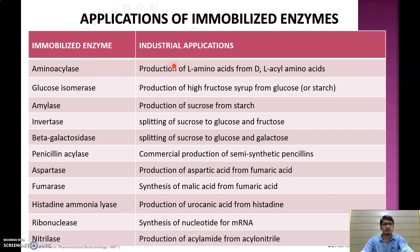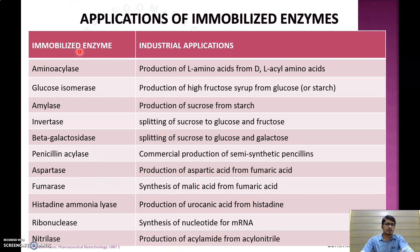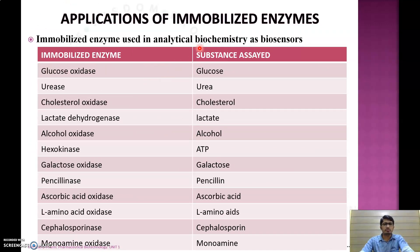Examples of immobilized enzymes and their industrial applications: aminoacylase for production of L-amino acids from D- and L-acyl amino acids; glucose isomerase for production of high-fructose syrup from glucose; amylase for production of sucrose from starch; invertase for splitting sucrose into glucose and fructose; penicillin acylase for commercial production of semi-synthetic penicillin; aspartase for production of aspartic acid from fumaric acid.